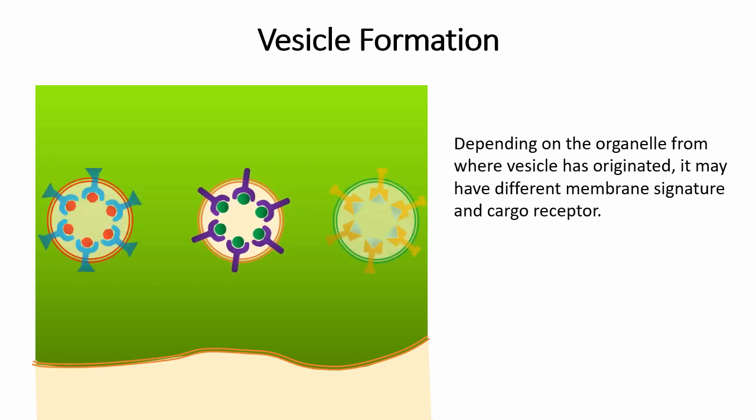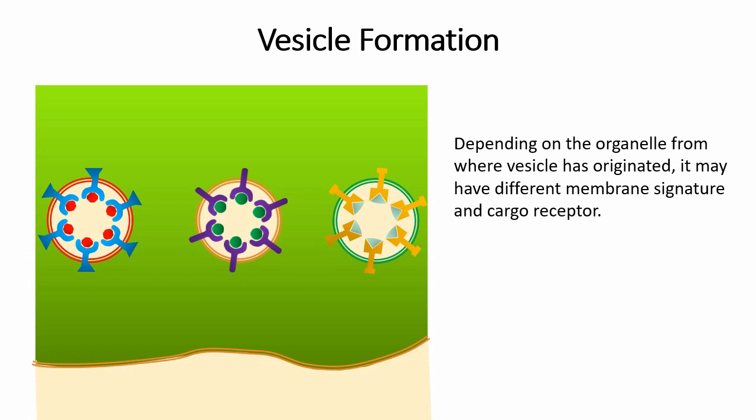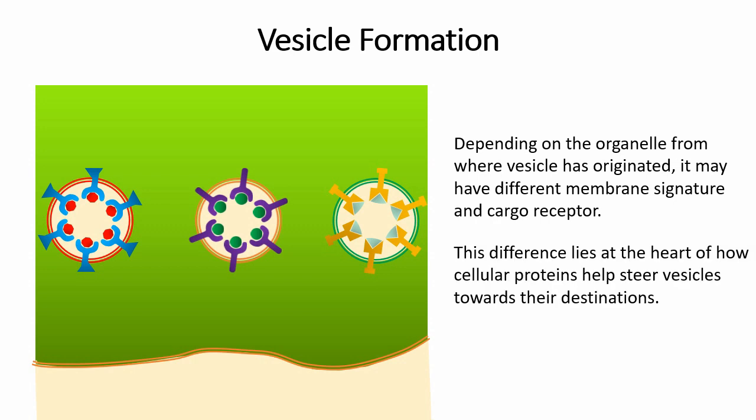Depending on the organelle from where a vesicle has originated, it may have different membrane signature and cargo receptor. This difference lies at the heart of how cellular proteins help steer vesicles towards their destination.